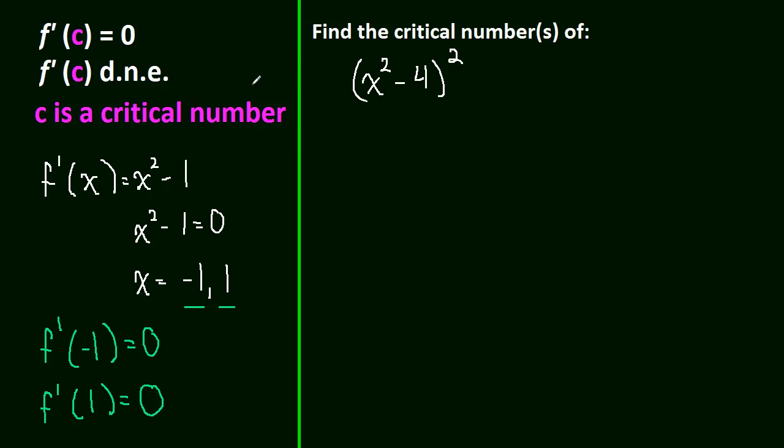Well, first things first, we need to take the derivative, right? We can't find a critical number without the derivative. So, the derivative of this function is going to be equal to 2. This is just a chain rule. Do the outside, repeat the inside, times by the derivative of the inside, which is just 2x.